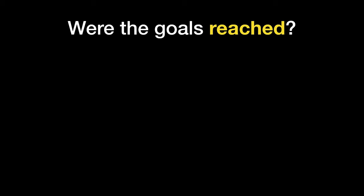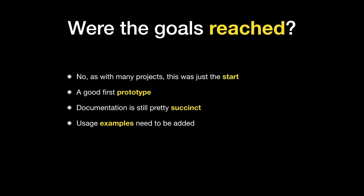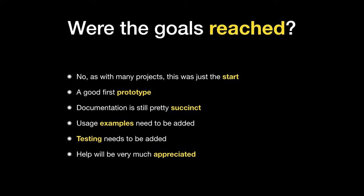Were the goals reached? No — as with many projects, this was just a start. We have a good first prototype with the functionality I wanted, but the documentation is still pretty succinct and I desperately need more examples (I'll steal some from this presentation). There's no testing at all yet, so tests need to be added. Help will be very much appreciated — if you find issues with RAK, make an issue; if you find bugs, a pull request would be even better.